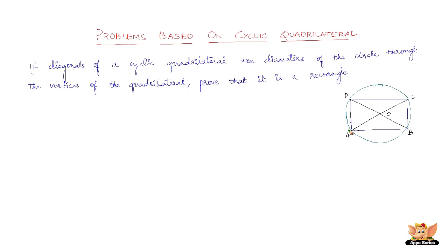Here we've got a cyclic quadrilateral ABCD, and then we've got the diagonals which are AC and BD. So they are the diameters of the circle, so if the diagonals of a cyclic quadrilateral are the diameters of the circle...